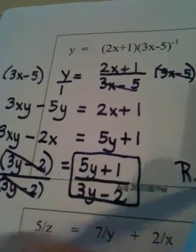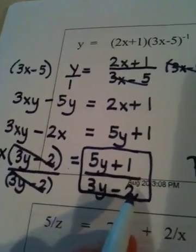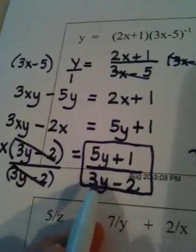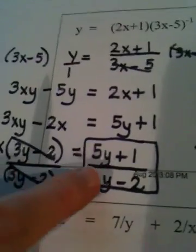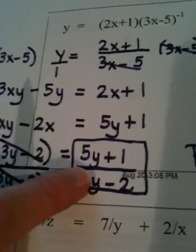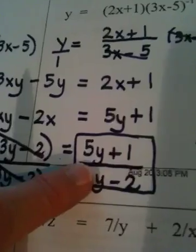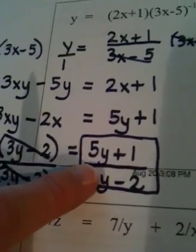We now have a new denominator so we have a new restricted value. This time it's y, y can't equal... And watch how we find it. Cover up the leading coefficient. If it just said y minus 2, the restricted value would be a 2.